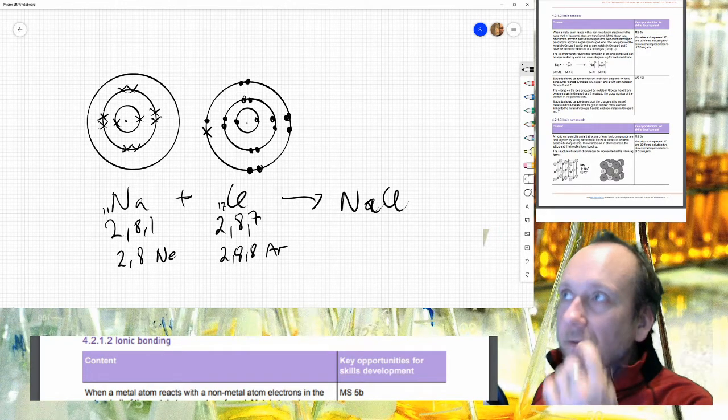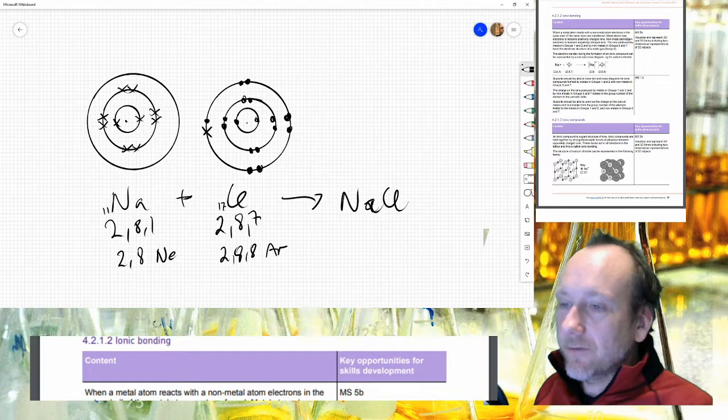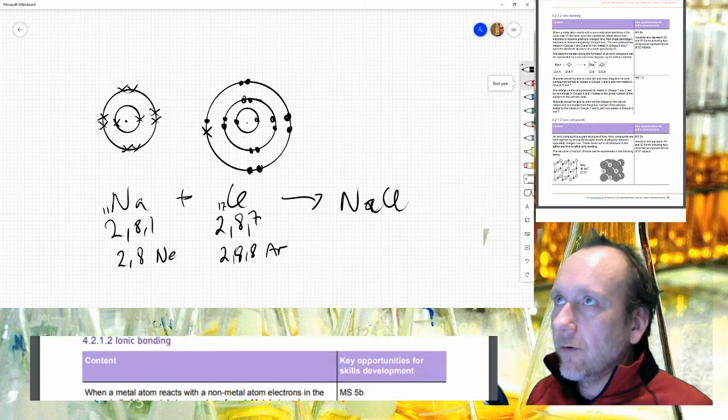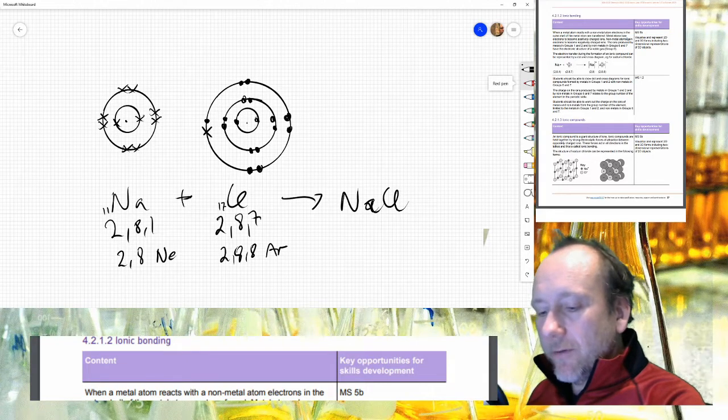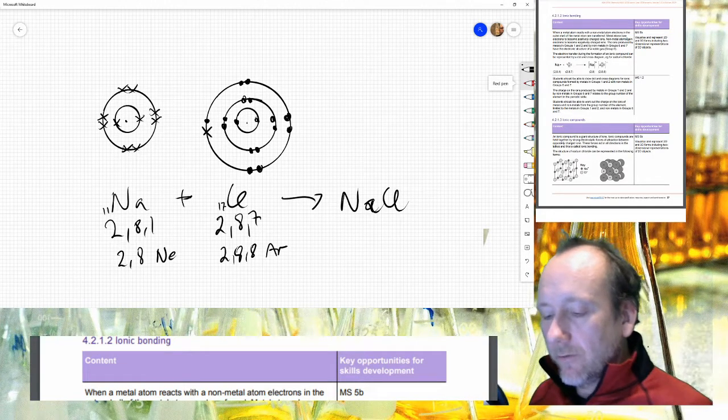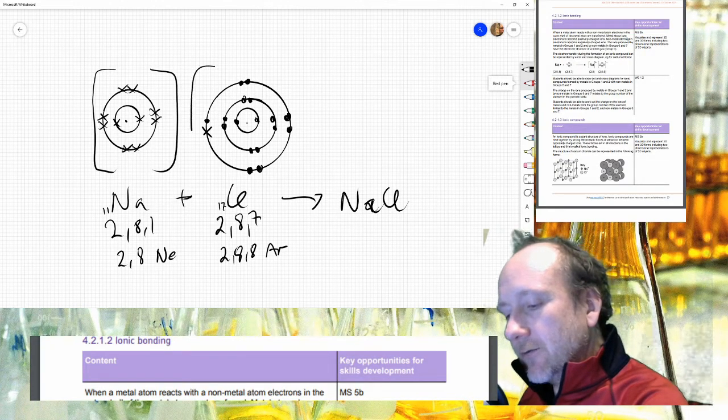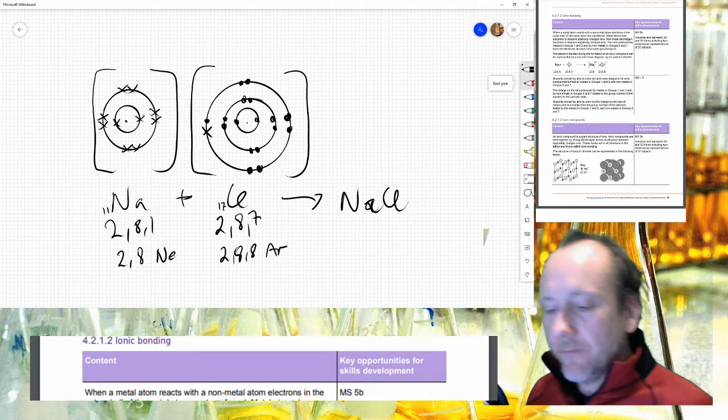Now, the question is, does the third shell still exist with no electrons on it? And the answer is probably not. So this is almost all of it. We now have sodium looking like neon and chlorine looking like argon, which is nice. And we can draw some square brackets around that because we're not quite finished yet.